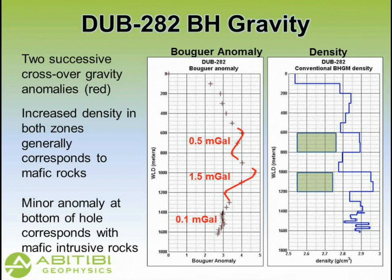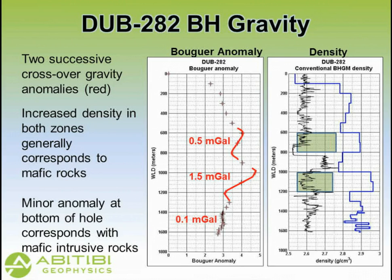The interpretation will be discussed by Ernst in a presentation later this afternoon. This is the total count gamma — passive total count gamma, not gamma-gamma for density — just showing the various rock property types and providing additional information for differentiation of rock types.